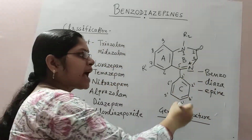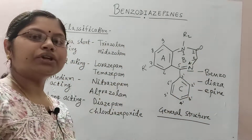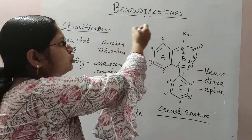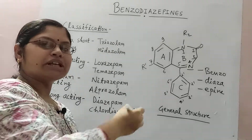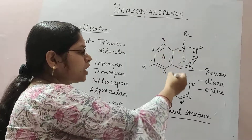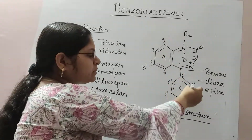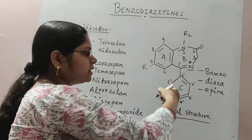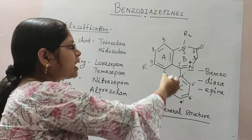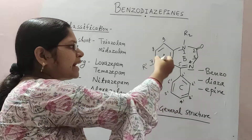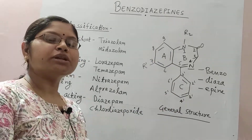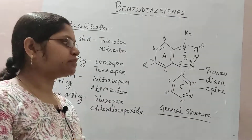Adding all three terms gives the name 'Benzodiazepines' for this structure. The purpose of ring C is to provide planarity to the structure and help in binding to the receptor.